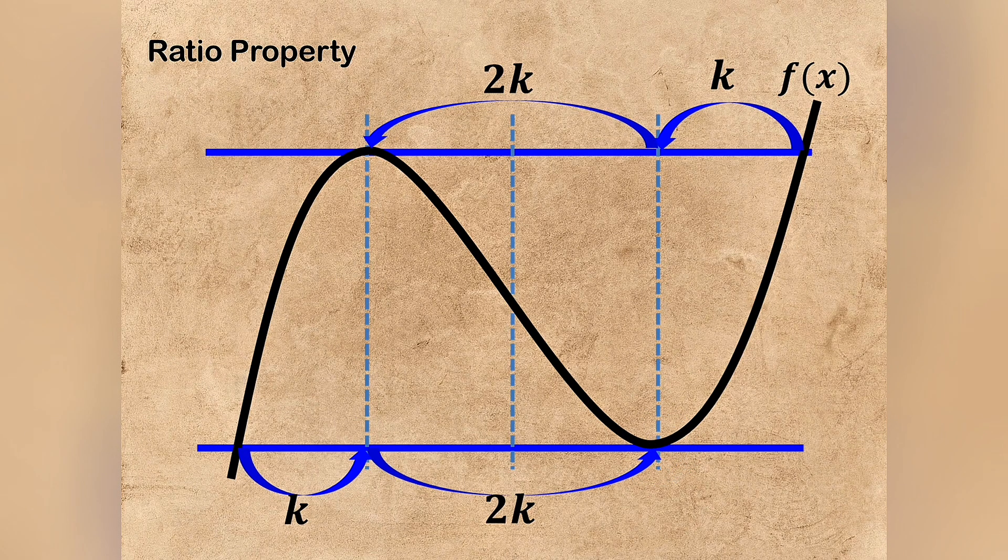If you draw two parallel straight lines through this local max and local min, and also draw three perpendicular lines through the local max, local min, and inflection point, you will see this beautiful ratio property.